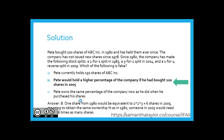And C — Pete owns the same percentage of the company now as he did when he purchased the shares — is absolutely correct. There's no information to show that Pete bought additional shares, and because stock splits, both reverse and regular, do not impact the percentage of the company, C is correct. So B is incorrect because he would absolutely need to have bought over 150 shares in 2005 in order to have the same percentage.